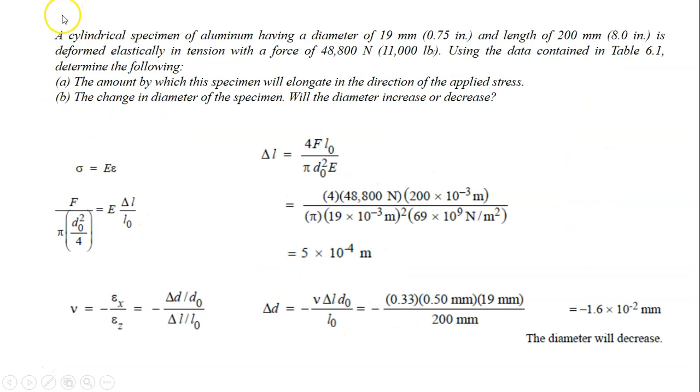We have the third example. A cylindrical specimen of aluminum having a diameter of 19 mm and length of 200 mm is deformed elastically in tension with a force of 48,800 Newton. Using the data contained in the table, in the previous table which I showed, determine the following.